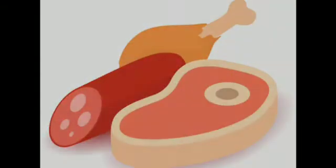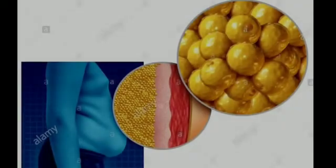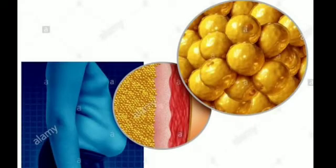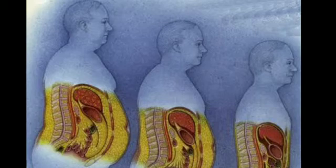The fats we eat get stored in our body. If food is not available for some time, the body can get energy from the stored fats. There is a layer of fat under our skin which gives shape to the body and, like a blanket, also prevents loss of heat from the body. The layer of fat in the body protects our internal organs, so an injury from outside does not at once cause damage to our bones or other internal organs.